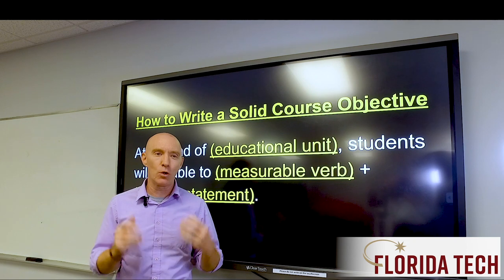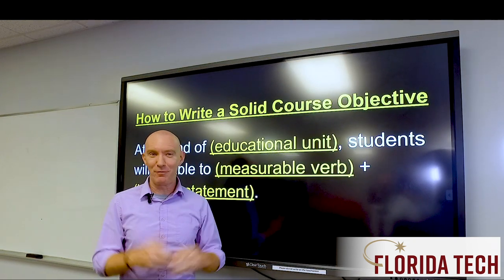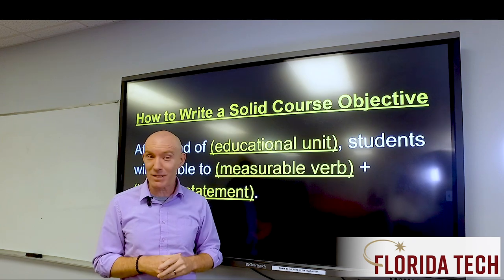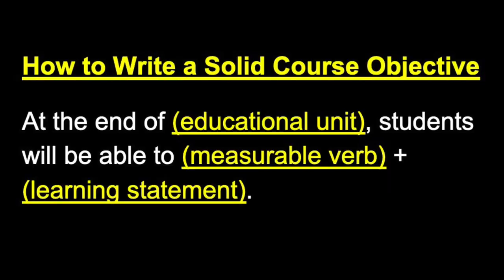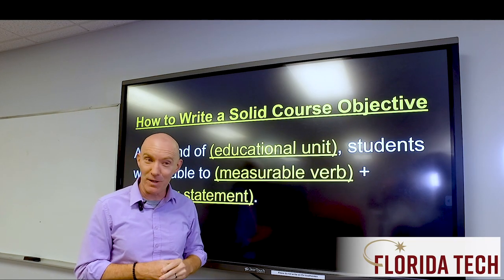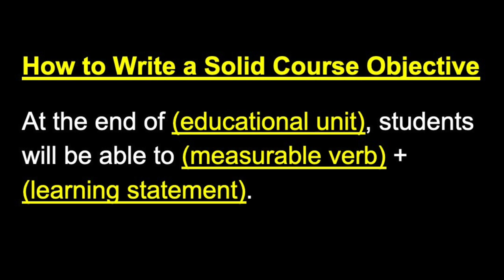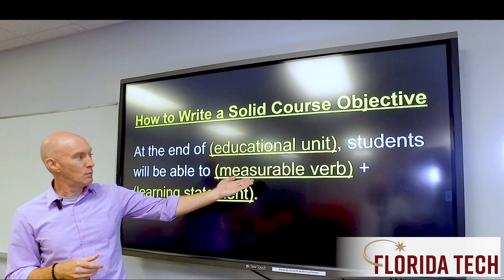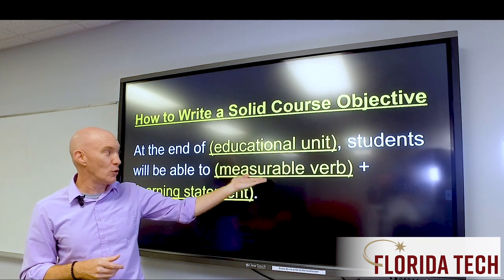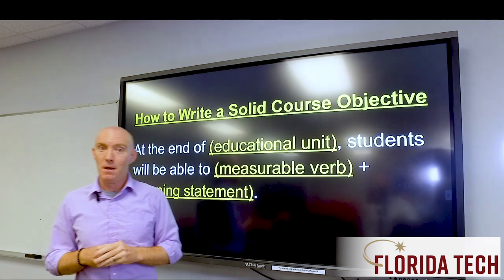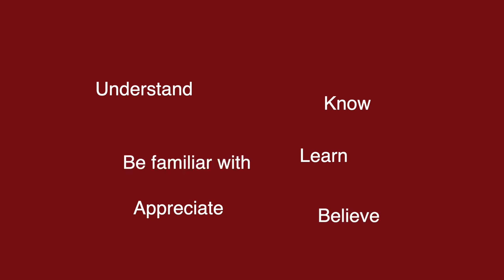So, how do you write a solid course objective? Let's start with a formula — Florida Tech is a STEM university after all. Here is the basic formula: at the end of a course, students will be able to [measurable verb from Bloom's taxonomy] [learning statement]. This is the area for one of Bloom's action verbs. One note of caution: verbs such as understand, know, learn, appreciate, believe, be familiar with, and comprehend are not observable or measurable and should be avoided.